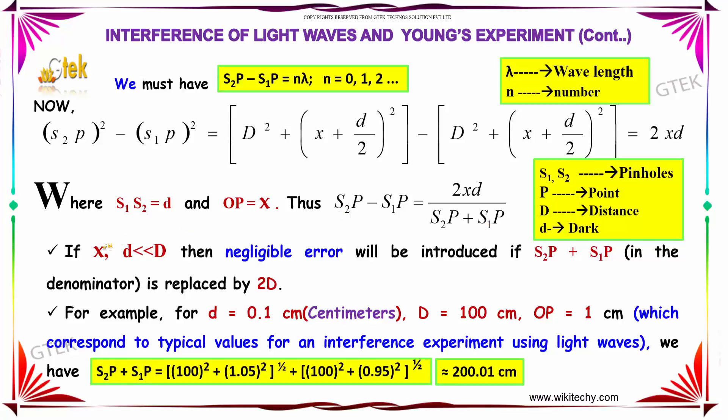If X, D which is really lesser than D, then negligible error will be introduced if S2P plus S1P is replaced by 2D. This one is replaced by 2D.